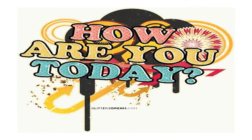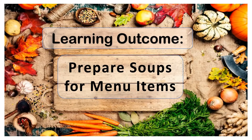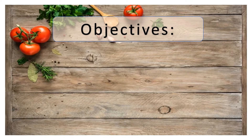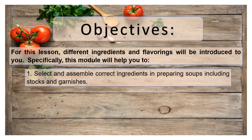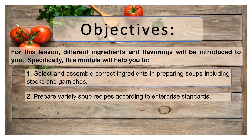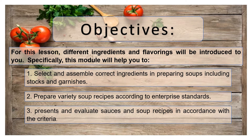How are you today? I hope you are doing great. For our CookAmazing lesson, we will discuss about preparing soups for menu items. For this Q3 Week 2 objectives, different ingredients and flavorings will be introduced to you. Specifically, this module will help you to select and assemble correct ingredients in preparing soups including stocks and garnishes, prepare variety soup recipes according to enterprise standards, and present and evaluate sauces and soup recipes in accordance with the criteria.